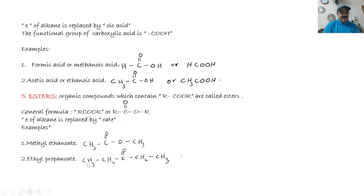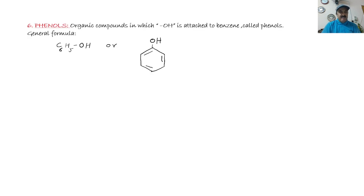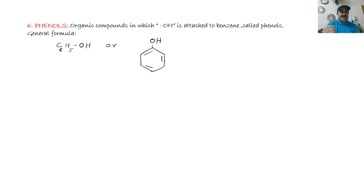Next are phenols. These are compounds in which O-H is attached to a benzene ring. The chemical formula is C6H5OH and it is also called carbolic acid. Organic compounds in which O-H is attached to a benzene ring are called phenols. The general formula is C6H5OH. If we replace one hydrogen from benzene it is called phenyl; since O-H is attached to benzene, the name is phenol.